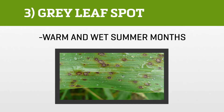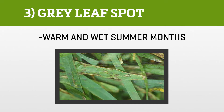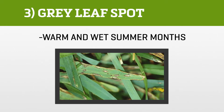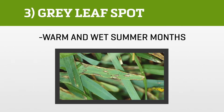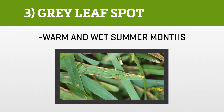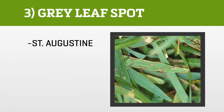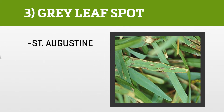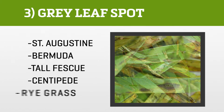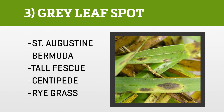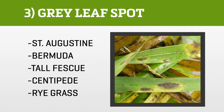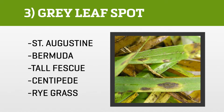You're going to want to watch out for gray leaf spot — Cercospora spp. It appears as small, oval gray spots during the warm and wet summer months on the blades of the plant. Caused by Pyricularia grisea, it likes to attack St. Augustine but has been known to affect bermuda, tall fescue, centipede, and rye grasses.